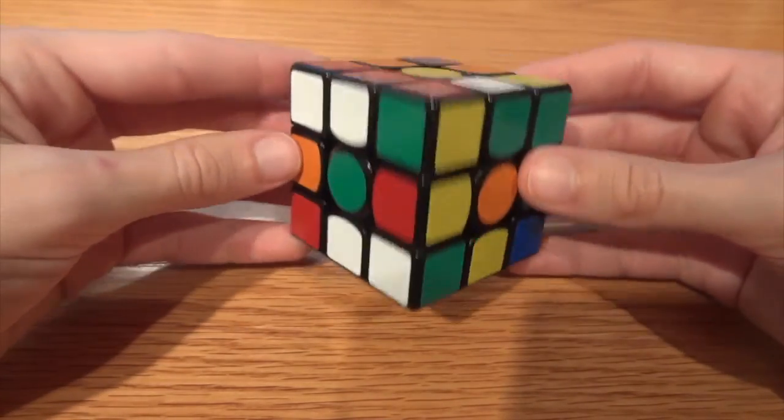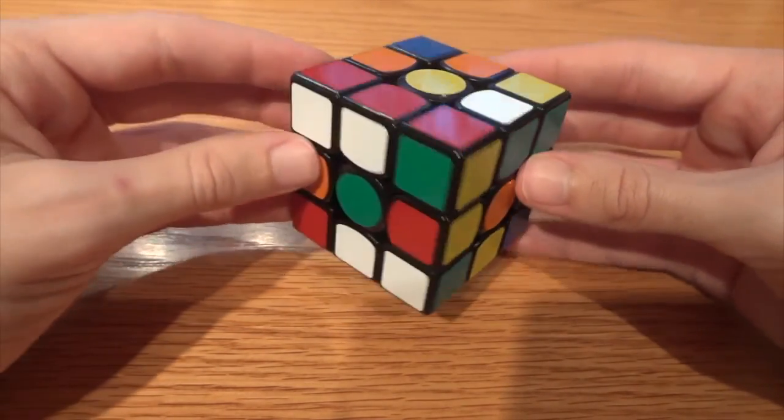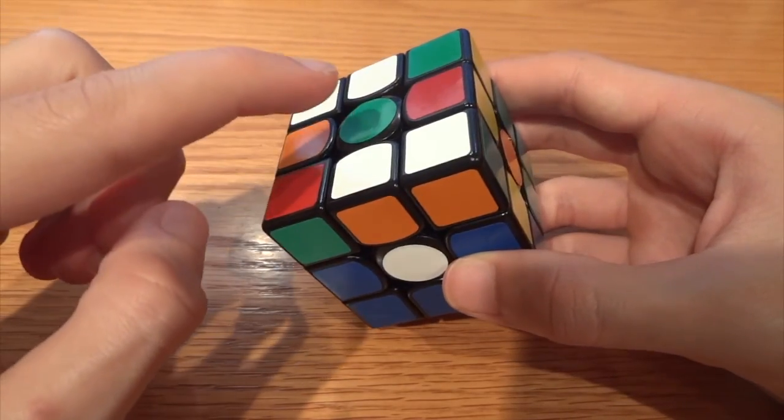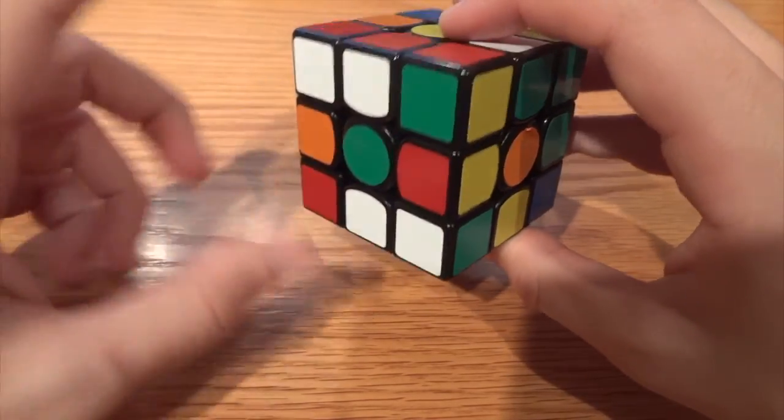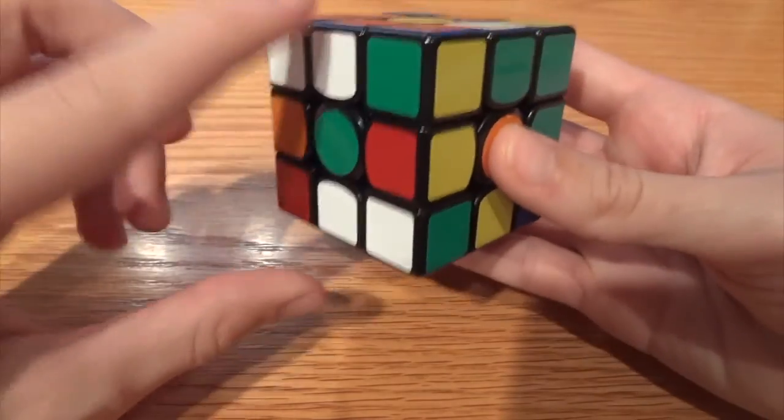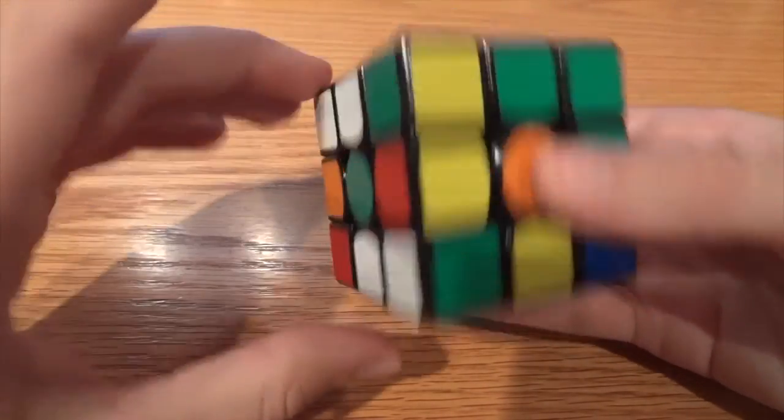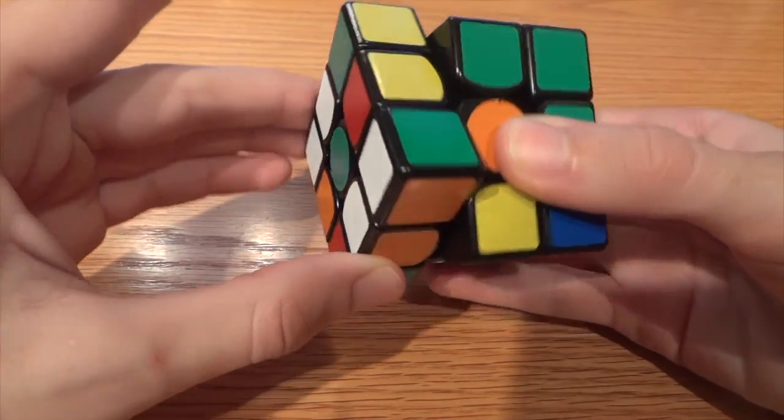Now obviously all my edges are floating, however I do notice that my orange and my red edges are positioned correctly relative to each other because they're opposite each other. So with one move I can hit both of these.